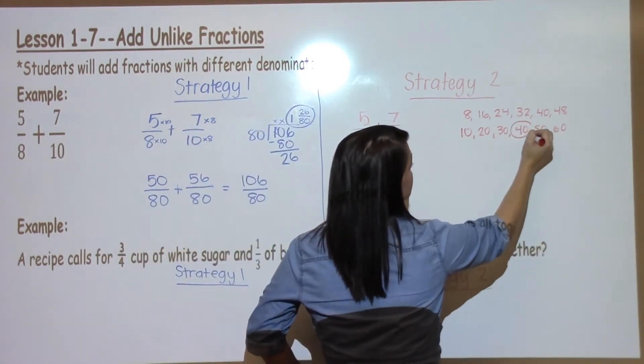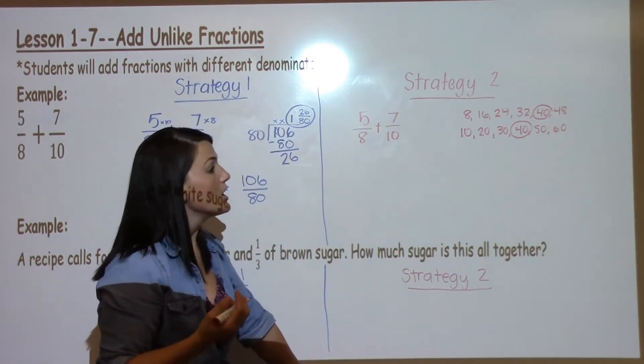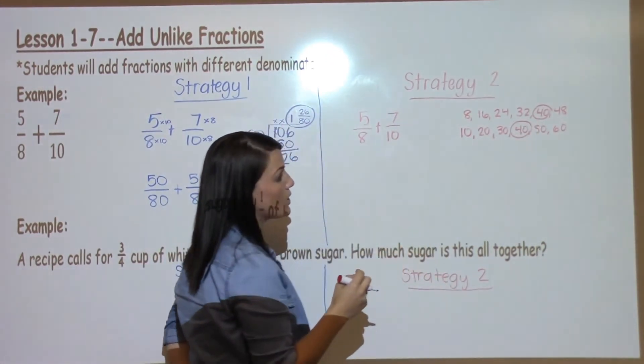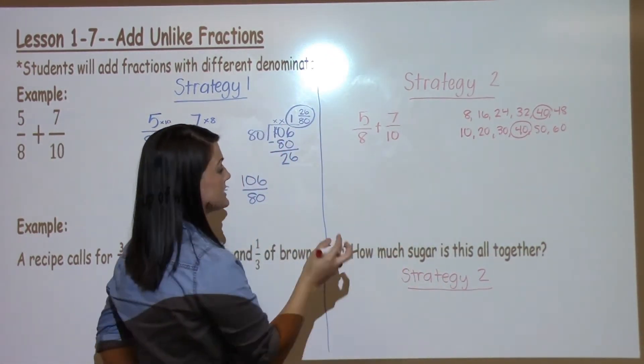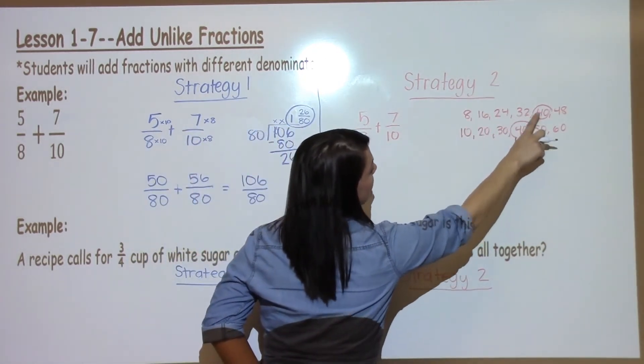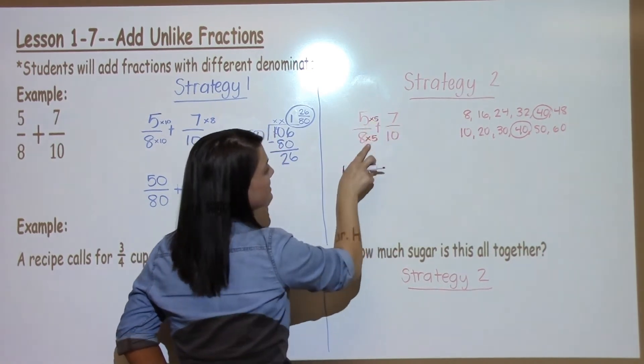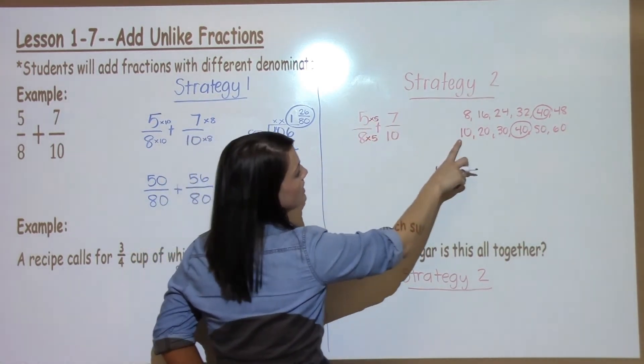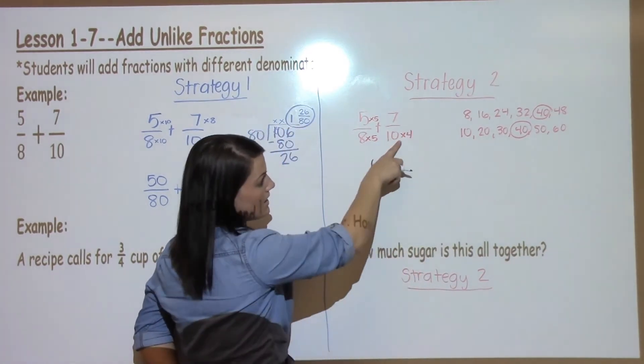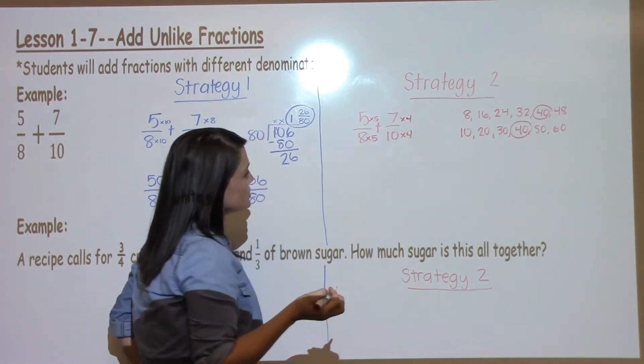As I look across, I see that they both have 40 in common. Now I know that I can make both denominators equal to 40, and then I can make them the same. So I think 8 times what? 1, 2, 3, 4, 5 gets me 40. Anything I do to the bottom, I must do to the top.